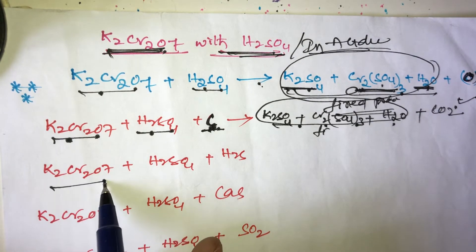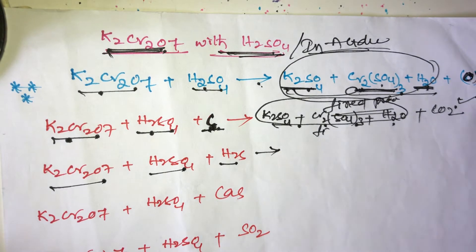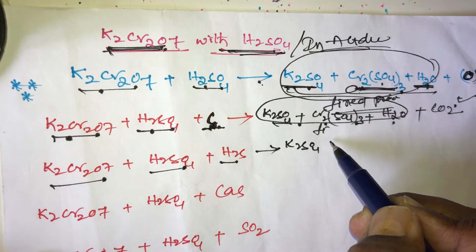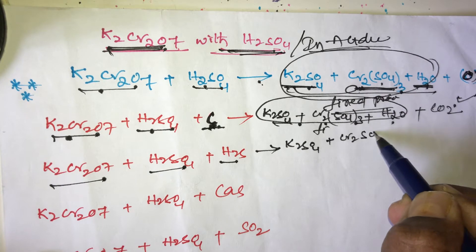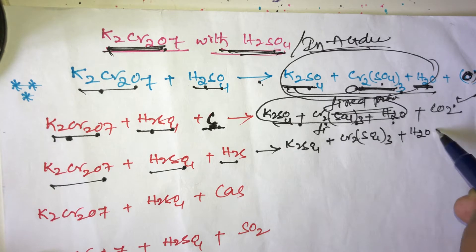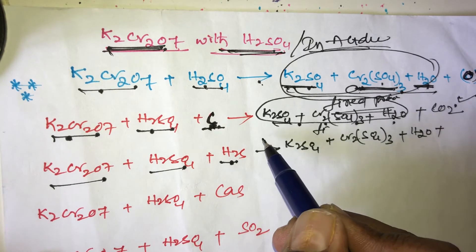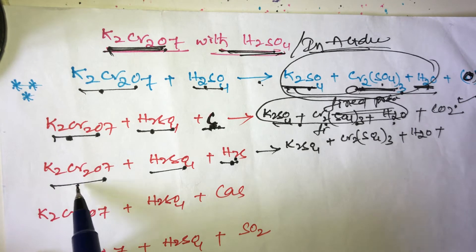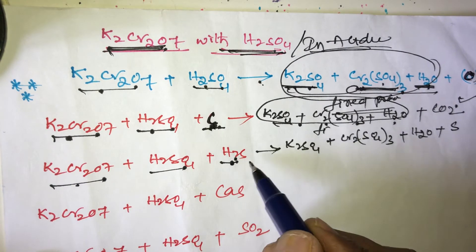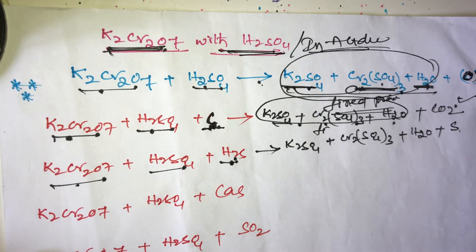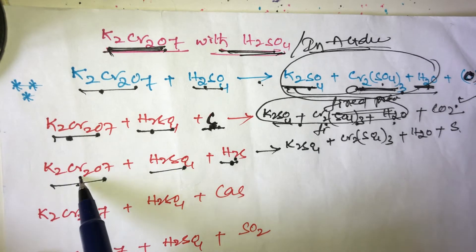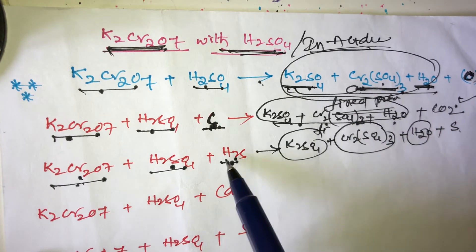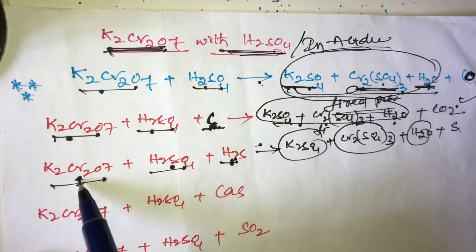Next example: K2Cr2O7 plus H2SO4 plus hydrogen sulphide (H2S). The fixed products are K2SO4 plus Cr2(SO4)3 plus water. Hydrogen sulphide on oxidation with K2Cr2O7 and H2SO4 is converted into sulphur. This is also very important.